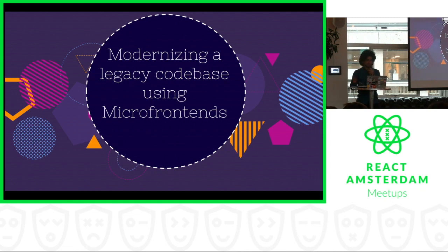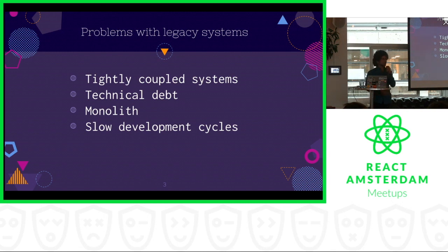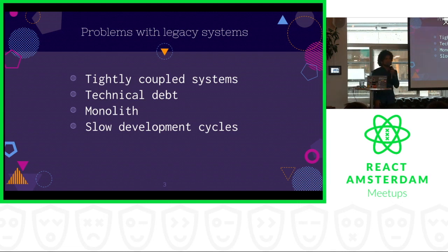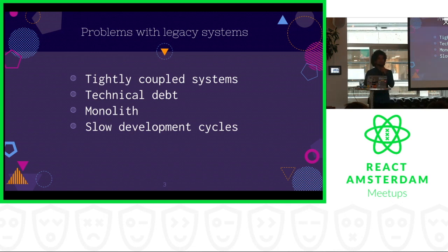Before I get into the talk, let me talk about the problems with legacy systems. Legacy systems are very tightly coupled — a change in one part of the system leads something else to break. They have a lot of accumulated technical debt over the years; some developer has made changes and probably left the company, leaving a lot of undocumented code. Usually these systems are monoliths, with the biggest disadvantage being a single deployment cycle. It leads to slow development: you make a change, build the whole project, wait for the build to finish, and only then can you see the change. This generally leads to bad developer experience.